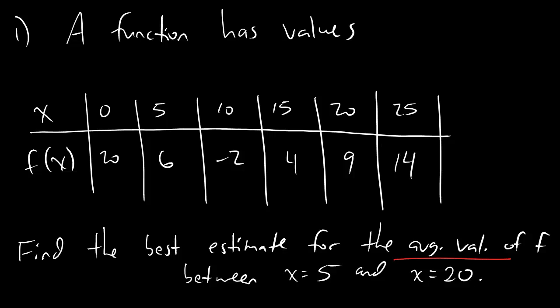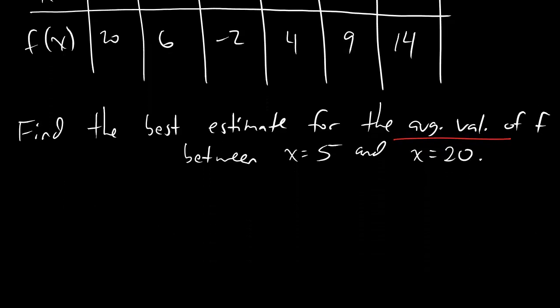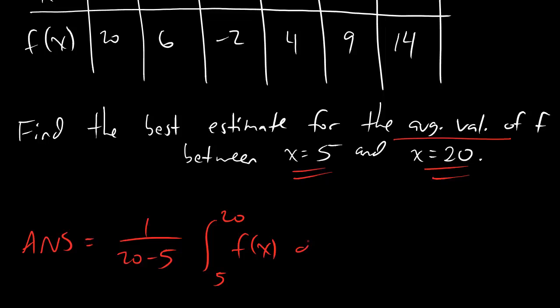then remember what the formula for average value is. Let's write that puppy out. The answer that we're looking for is going to be this. We're looking for between 5 and 20. So, the answer is going to be 1 over 20 minus 5, integral from 5 to 20, f of x, dx.